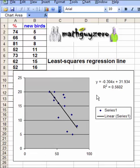And your least squares regression line for this data is Y equals negative 0.304 times X plus 31.934, and the correlation squared is 0.5602.